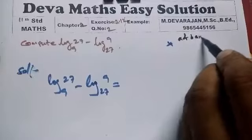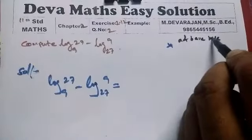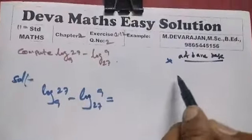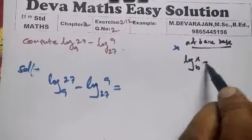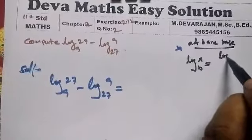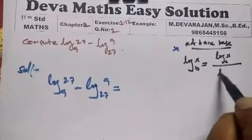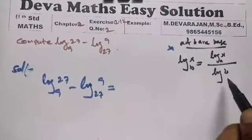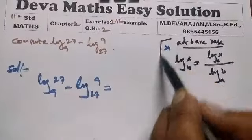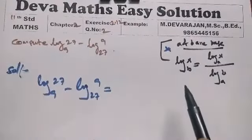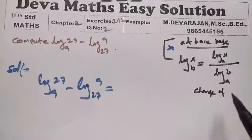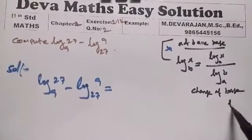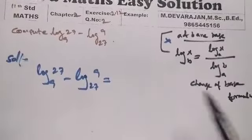If A and B are bases, log X to the base B equals log X to the base A divided by log B to the base A. This is the change of base formula.